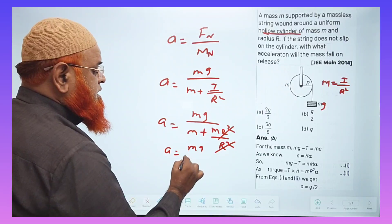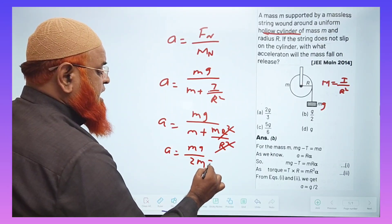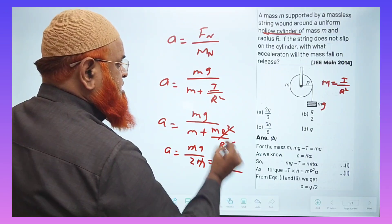A is equal to Mg by 2M and M gets cancelled. Your answer is going to be G by 2.